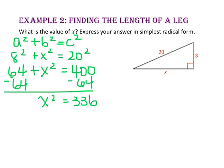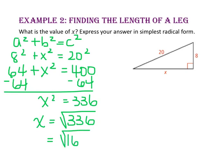Take the square root of both sides and x will equal the square root of 336. Since 336 is not a perfect square, we need to simplify. I know that 16 and 21 are factors of 336, so I will take the square root of 16 times the square root of 21. The square root of 16 is 4, and the square root of 21 cannot be simplified, so 4 times the square root of 21 is the length of x.